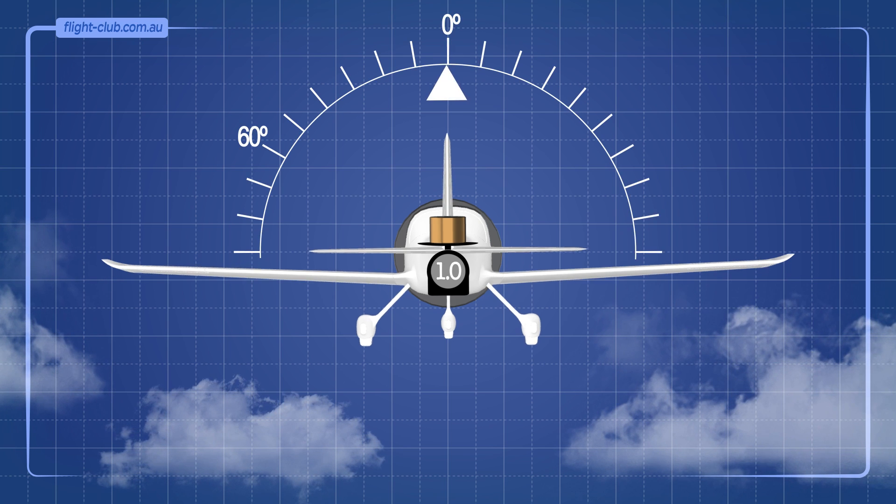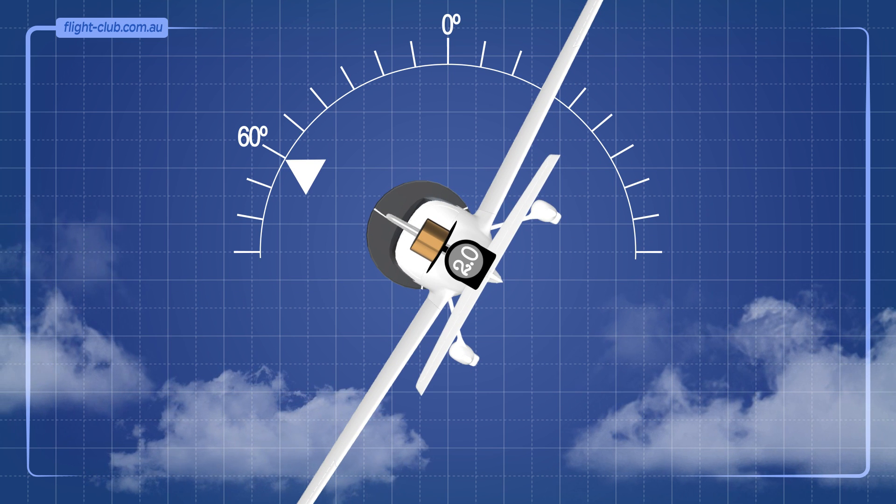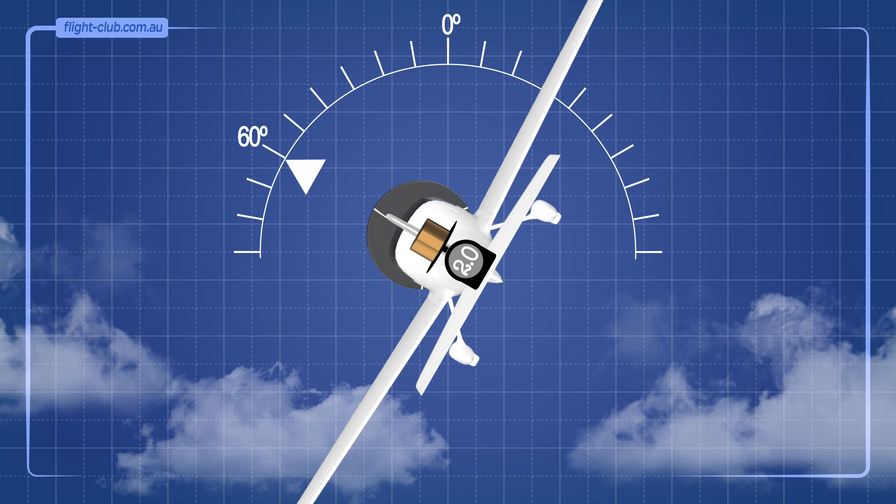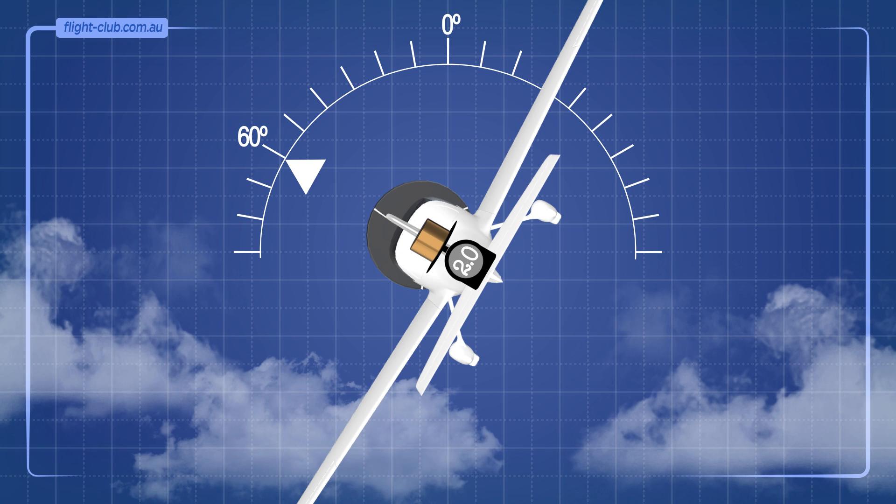But when the aeroplane executes a balanced turn of 60 degrees angle of bank, the scale shows 2 kilograms of weight. This aeroplane is experiencing a load factor of positive 2g.